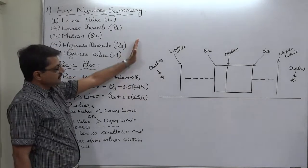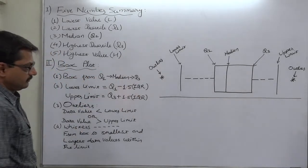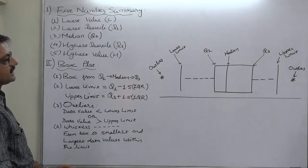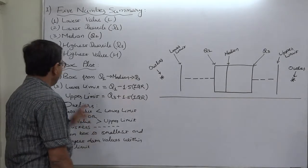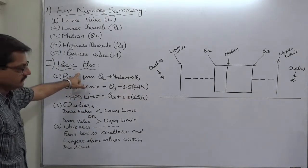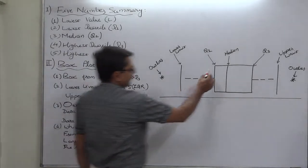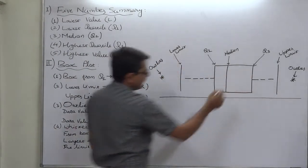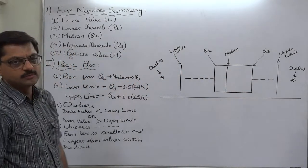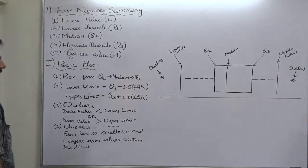Together with five-number summary, there is another technique that is actually a chart or graph known as box plot. We can see a shape of box in this diagram. That's why it is known as box plot.